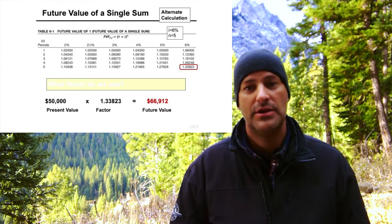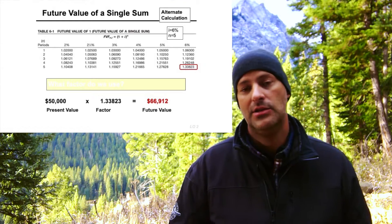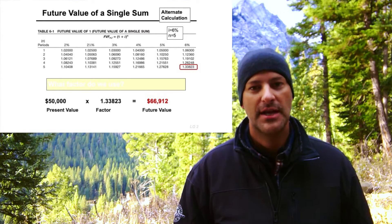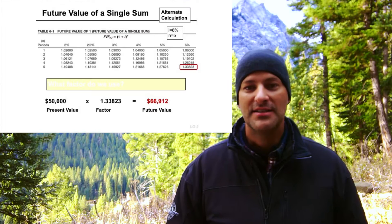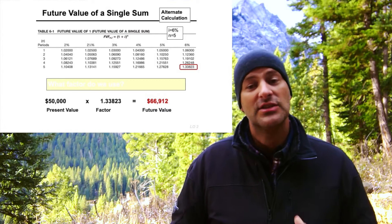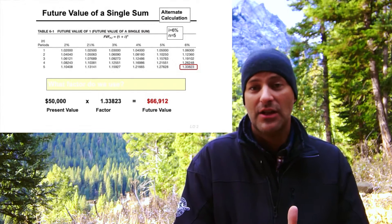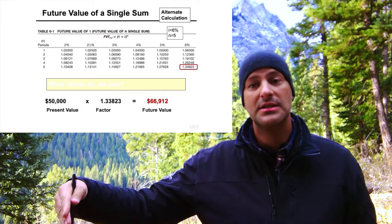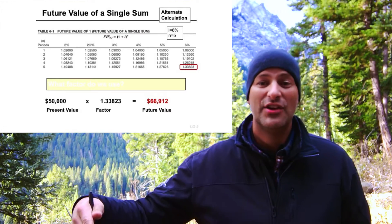We take 1.338 — that's the number you actually get from the table — and multiply it times $50,000, which gives us a future value. That $50,000 has grown to $66,912 in five years at 6%, an increase in value of basically $16,912 over the course of those five years, paying 6% for five years.